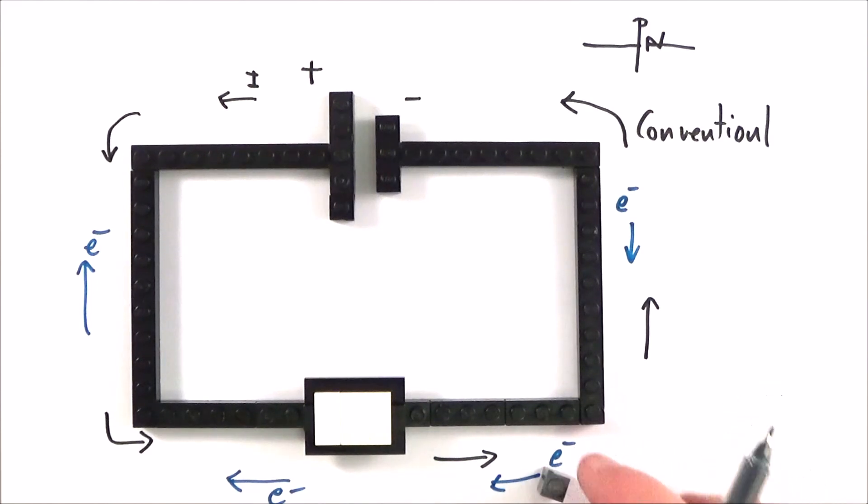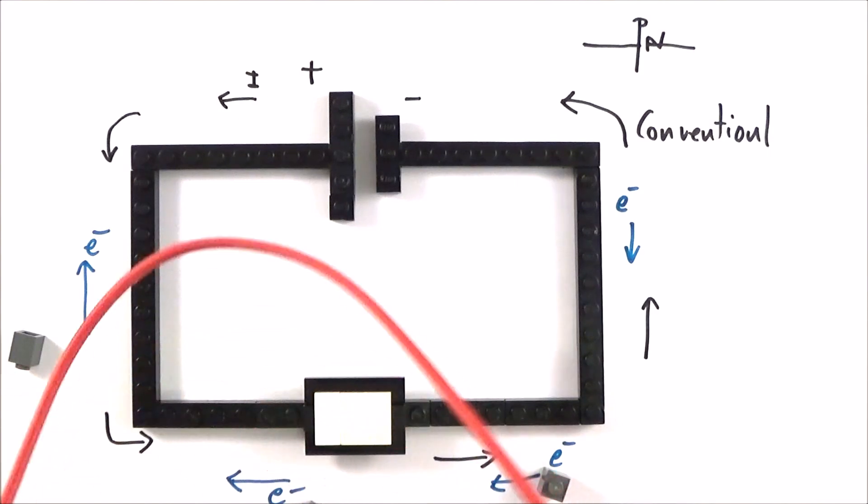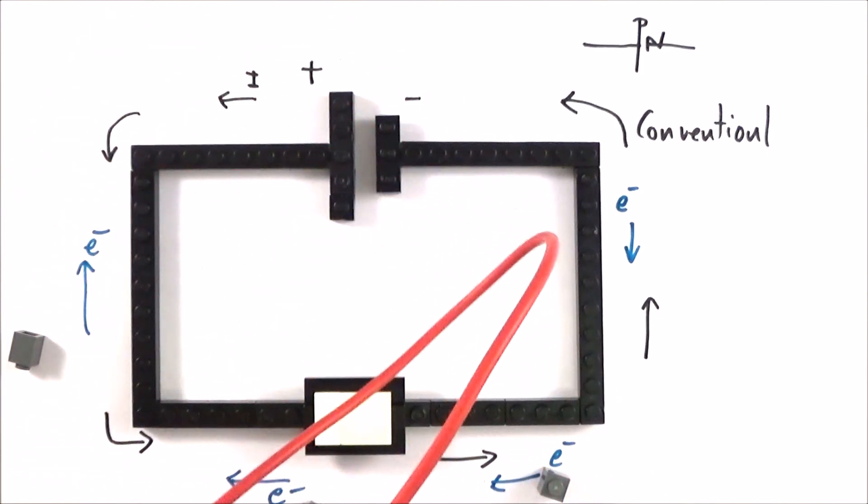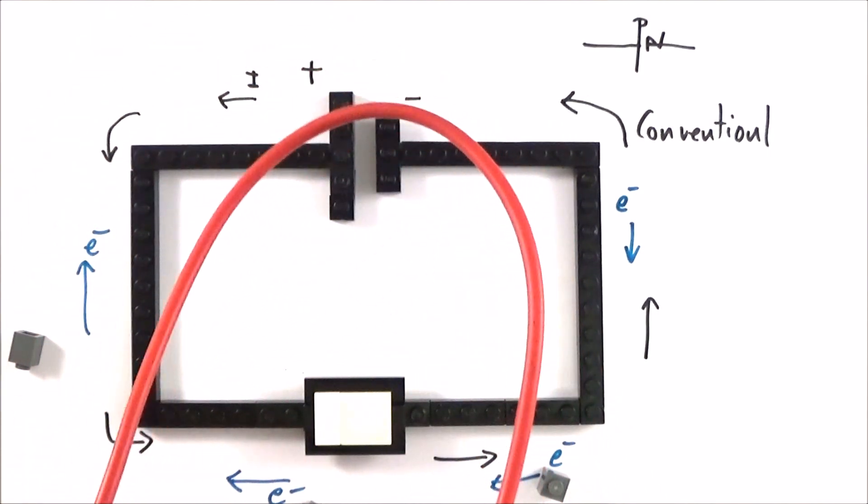So these blue arrows here just show the direction that the electrons are actually moving in. And when you look at a wire, it's very hard to actually tell what's going inside, because if we look at this wire here, is there any electrons flowing inside it? Well, we can't tell, so we need some kind of measuring device.